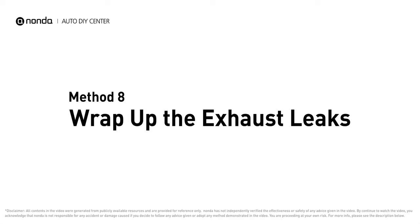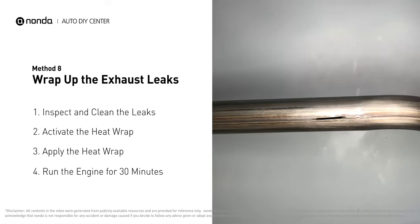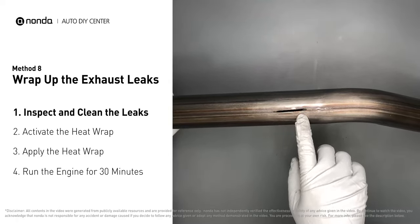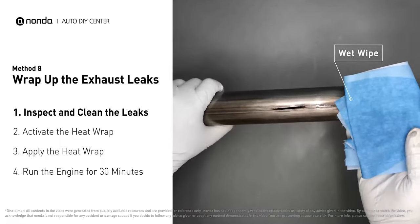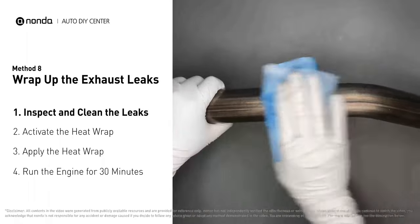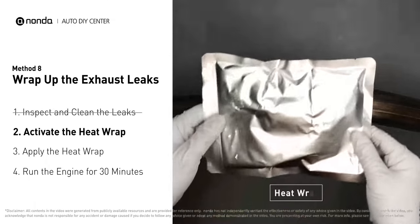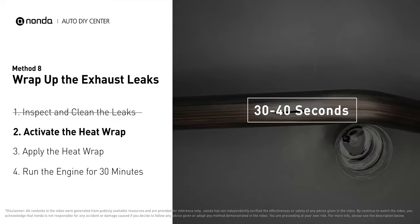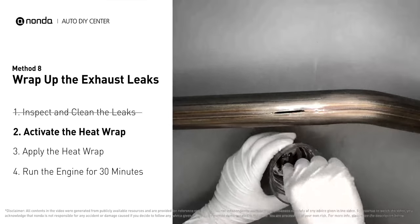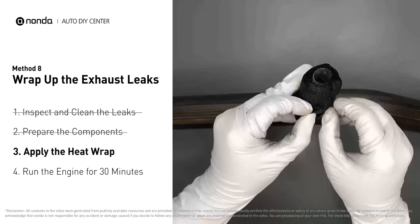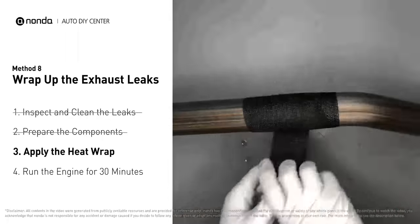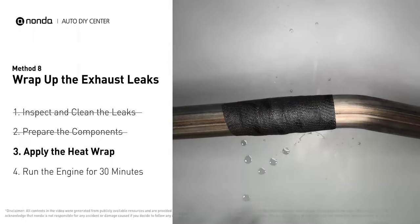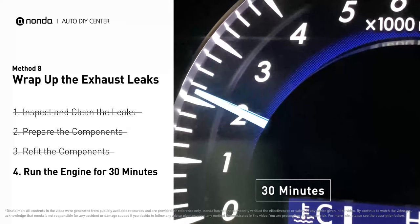Method 8: Wrap up the exhaust leaks. Exhaust pipes are made out of rolled steel with a welded seam — the seam will often rot and leak. First, use sandpaper and a wet wipe to clean the leaking area. Get the heat wrap, put it in water for about 30 to 40 seconds to start the activation process, then remove it and squeeze out any excess water. Wrap it around the leaking area and overlap it a couple of inches on each side, repeating the process 3 or 4 times. Squeeze it to make the resin go all through it. Start the car and let it run for 30 minutes so the heat cures it and makes a permanent fix.